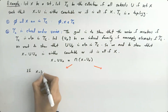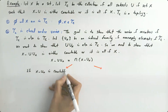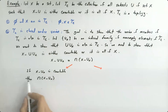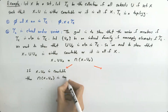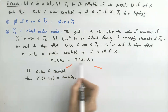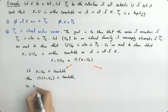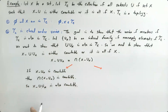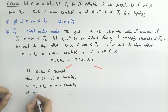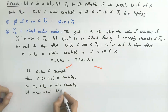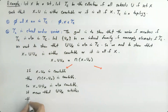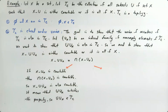If X minus U_α is countable, then the intersection of countable sets is also countable. Since the left-hand and right-hand sides are equal, X minus the union of U_α's is also countable. It means that the union of U_α's satisfies the property, so the union of U_α's is a member of τ_C.